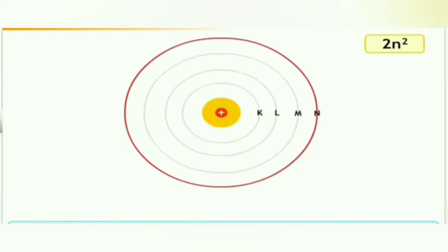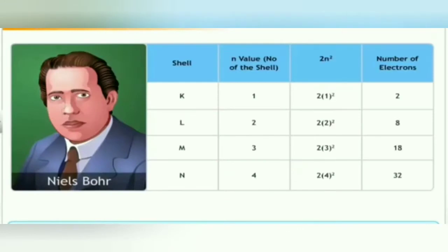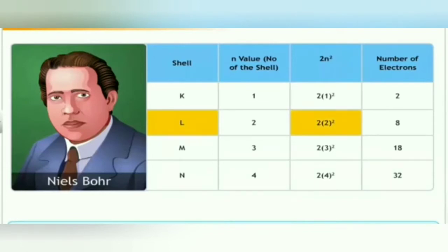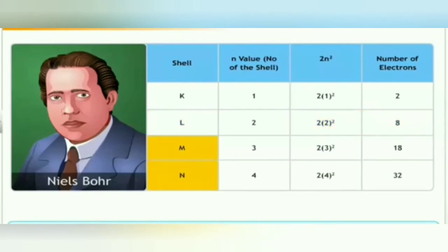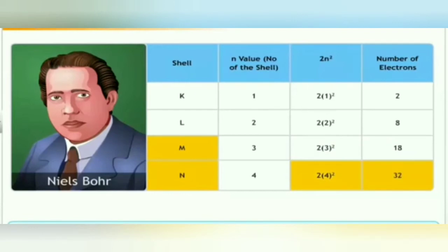For example, for the first shell, the value of N is equal to 1. According to the formula, 2 × 1² = 2. So the maximum number of electrons in the first level is 2. According to Bohr's model of atom, the first energy level K can have maximum 2 electrons. The maximum number of electrons in shell L is 2 × 2² = 8. Similarly, for M and N shells, the maximum numbers are 2 × 3² = 18 and 2 × 4² = 32 respectively.